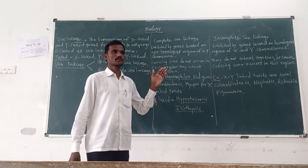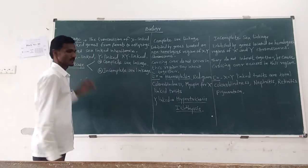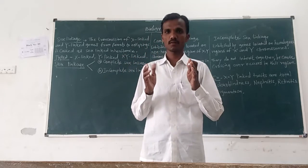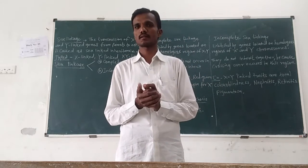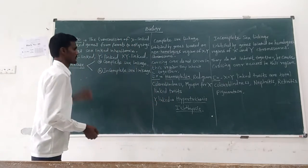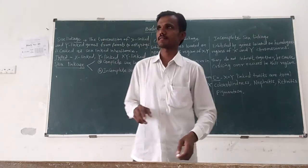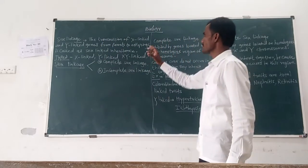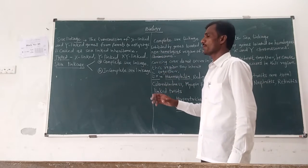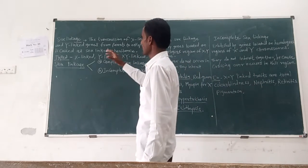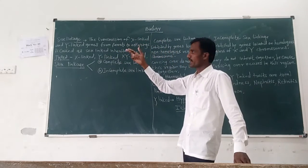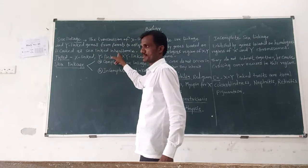Next point is sex linkage. Last lecture we studied information and types of linkage. Now another type of linkage is sex linkage. It is defined as the transmission or inheritance of X-linked and Y-linked genes from parents to offspring, which is called sex-linked inheritance.